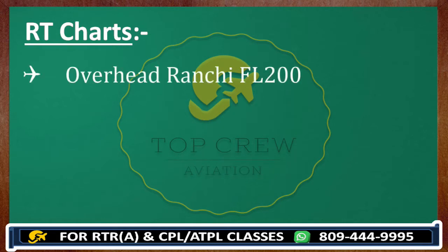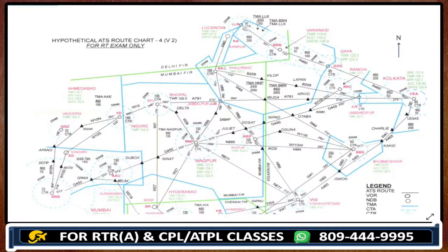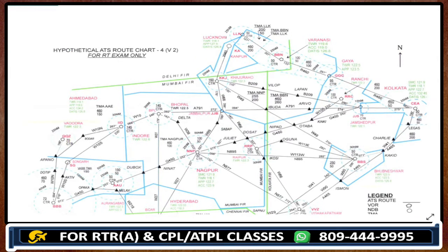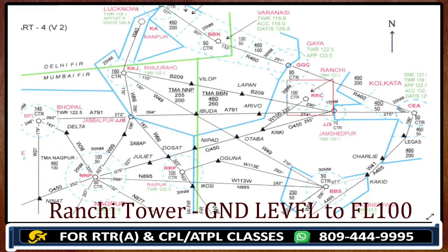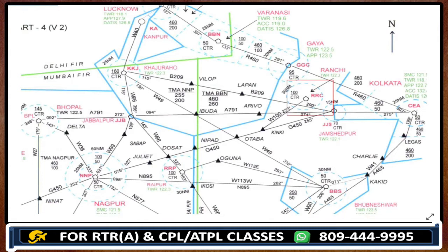Next I gave you guys overhead Ranchi at flight level 200. We are all aware that Ranchi is nearby Jamshedpur and that is nearby Kolkata. Your chart number is 4 and here is Ranchi. The first ATC available is Ranchi Tower and the limit of Ranchi Tower is from ground level to flight level 100. Our flight level is 200, which is not within that limit.